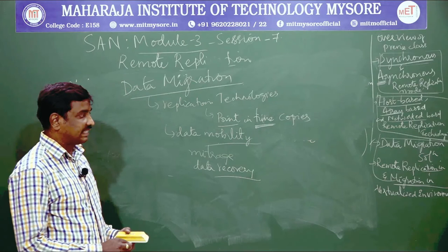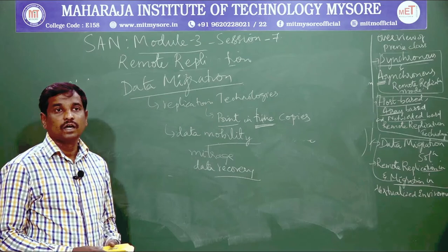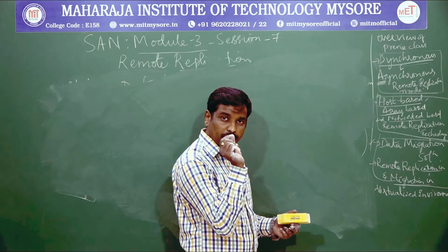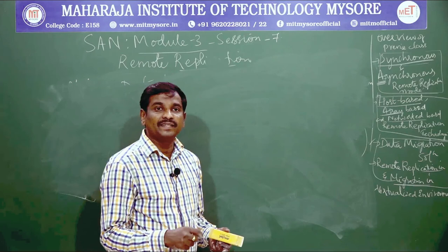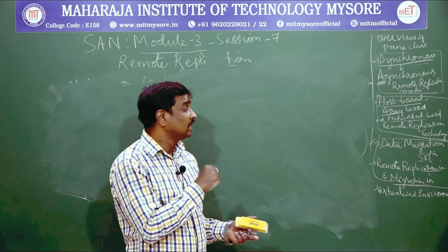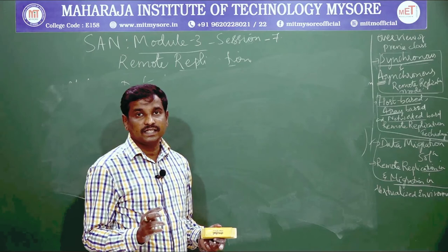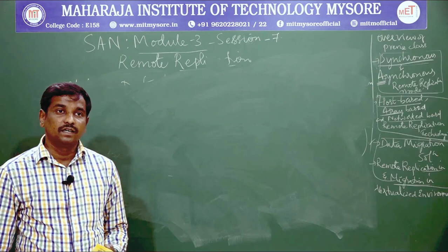Data migration means copying the data at a particular point in time — not continuously like replication. Every point in time, data is copied to a remote location. Now let us understand how remote replication and migration are done in a virtual environment. Remote replication in a virtualized environment is done through remote mirroring of virtual volumes instead of real volumes.